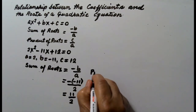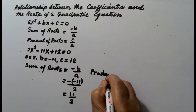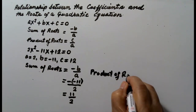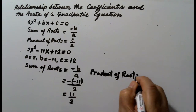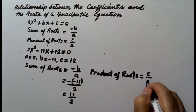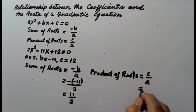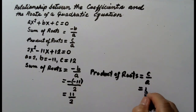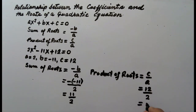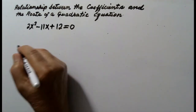The product of the roots is equal to c over a. c is 12 and a is 2, so 12 divided by 2 is 6. Therefore, the product of the roots is equal to 6.